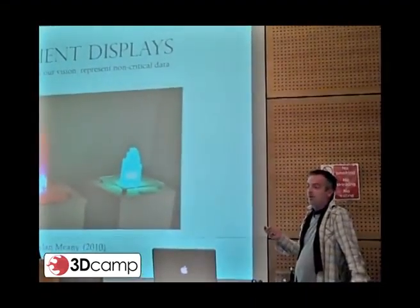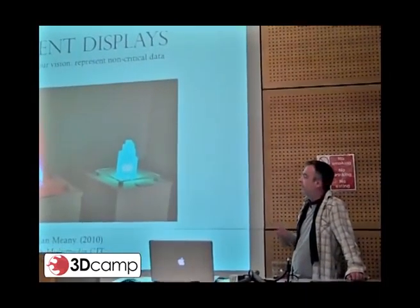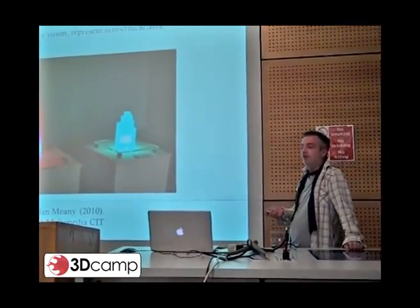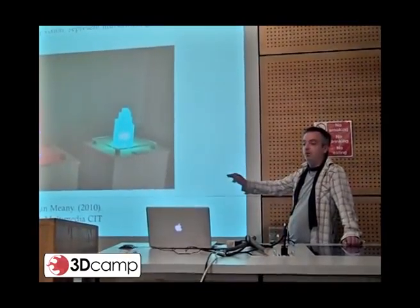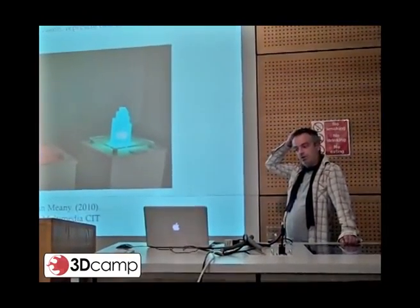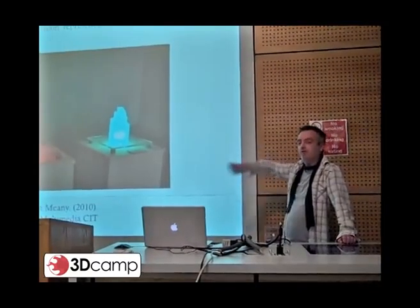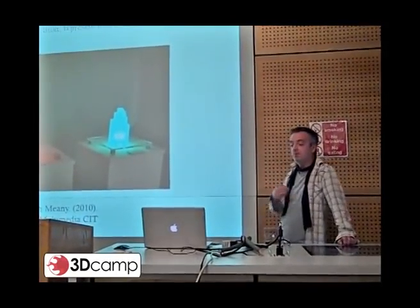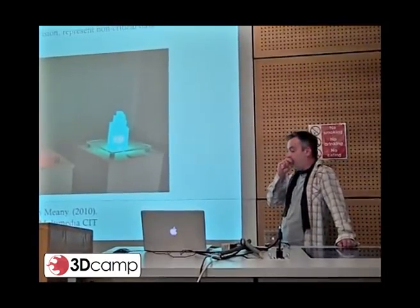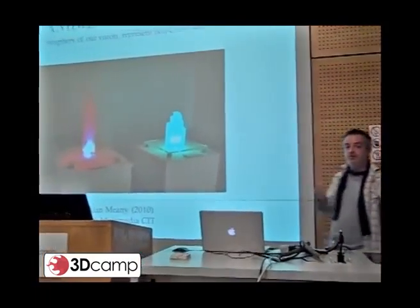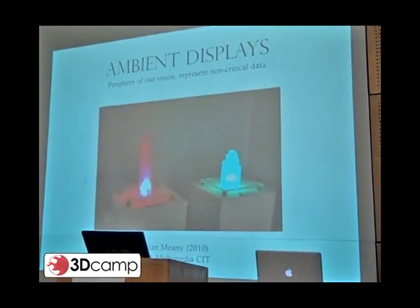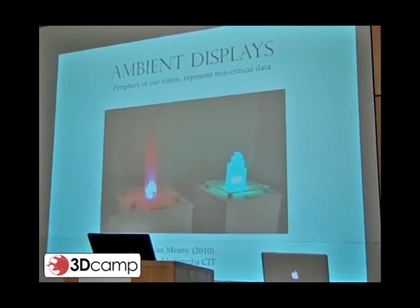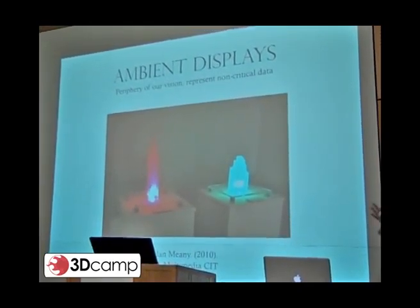This is a piece by one of my students in Cork two years ago. These are ambient displays that are monitoring the energy levels within the household — lamps you would have in your sitting room or kitchen, in the periphery of your vision. They glow from blue all the way up to red based upon the energy usage within your house, so you can monitor how much energy your house is using in a kind of artistic, architectural way.